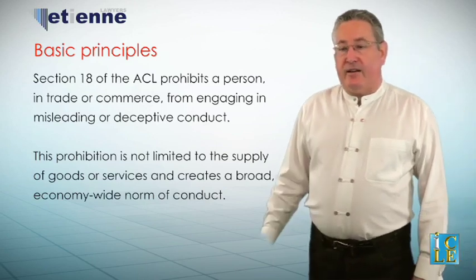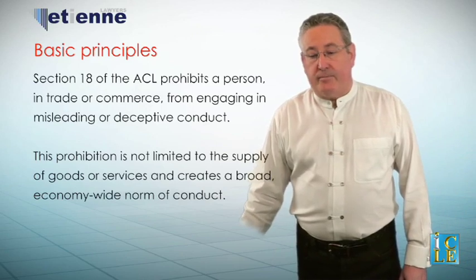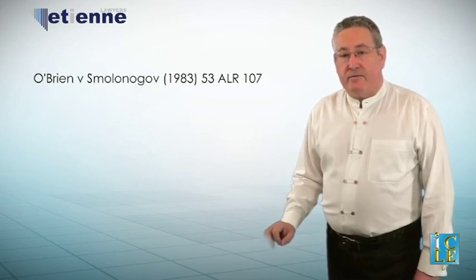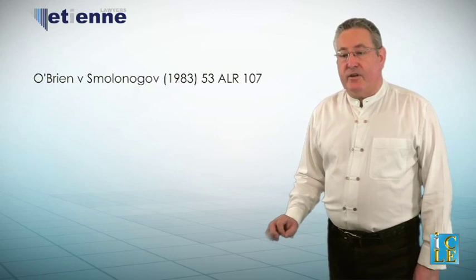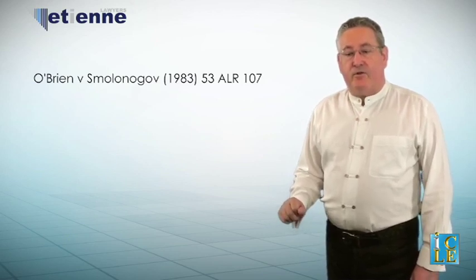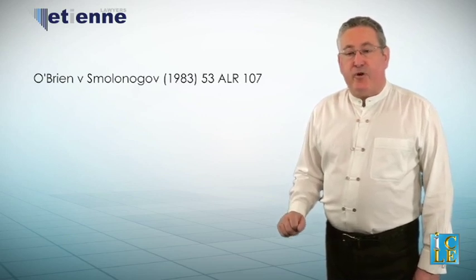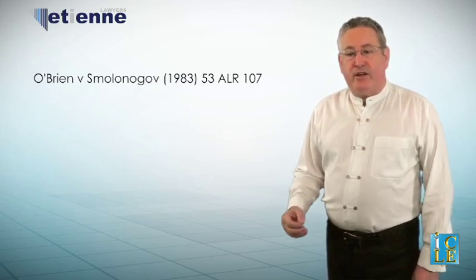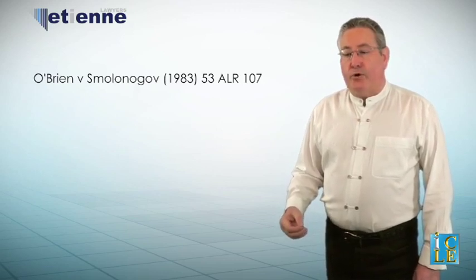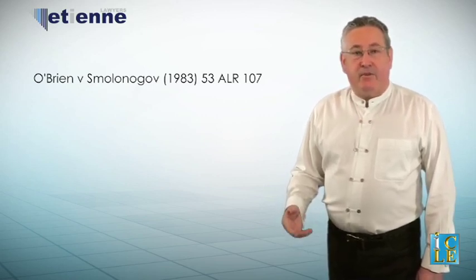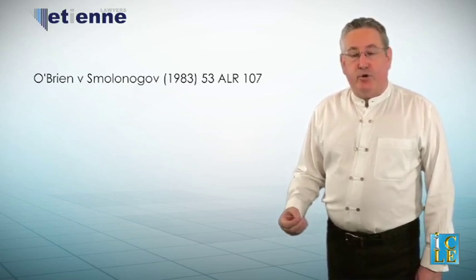What we need to first understand is the concept of trade and commerce. In one of the earlier cases, O'Brien v Smolagov [1983] 53 ALR 107, the Federal Court held that a private sale of a parcel of rural land was not a transaction in trade or commerce. The Federal Court applied a number of American decisions which drew a distinction between private or non-trade practices and the sale of land or goods or services within a commercial context.